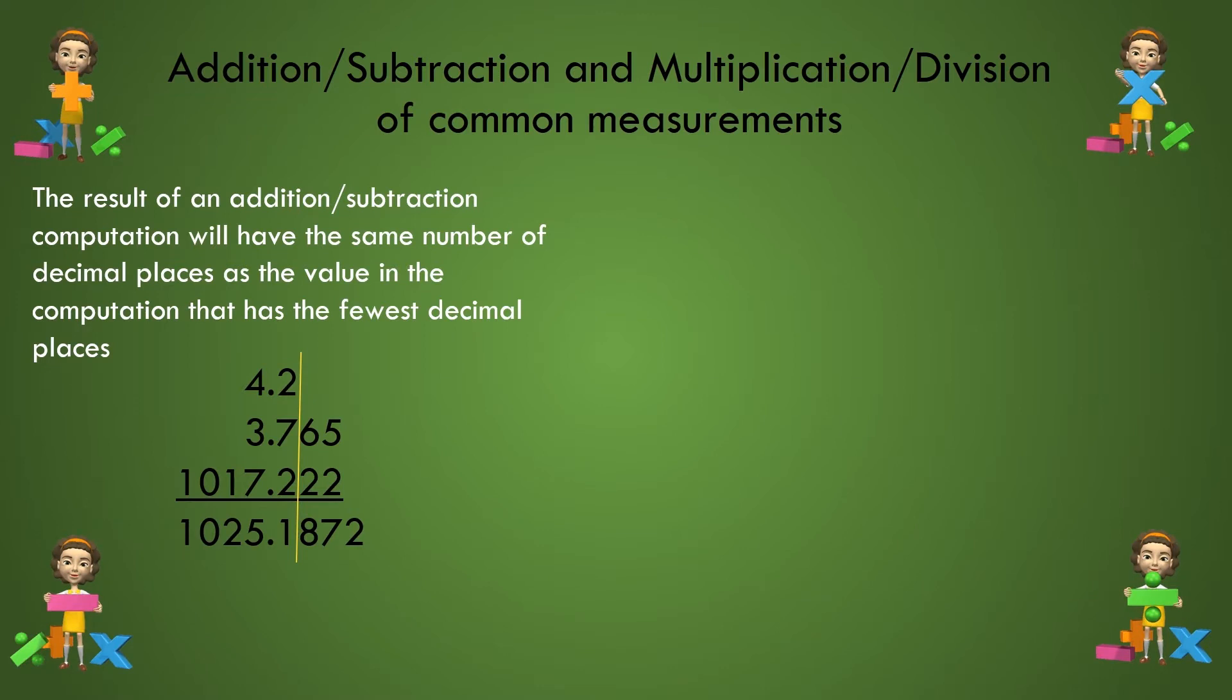If each of these values had the units of mass, such as grams, the 4.2 value must have been the one measured on the least precise balance. This value dictates the precision of the computation and where we need to round off the calculated result. In this case, that will be the tenths position leading to result of 1025.2.